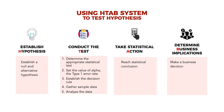The first step is to establish the hypothesis. There are two types of hypothesis: the null and alternative hypothesis. The second step is to conduct the test. The process in conducting the test includes: first, determine the appropriate statistical test, which we will get to later. Second is to set the value of alpha, which is the type 1 error rate. We may have different choices such as 0.01 or 0.05, which we will discuss later on.